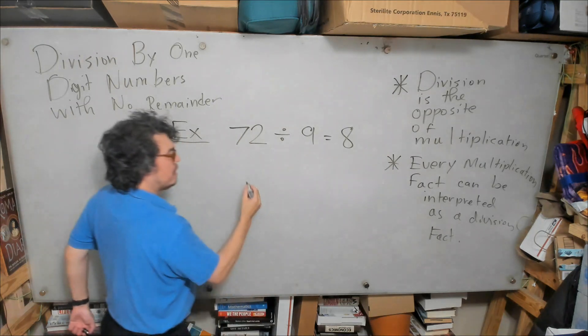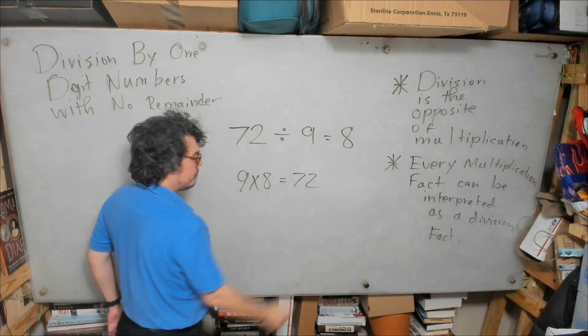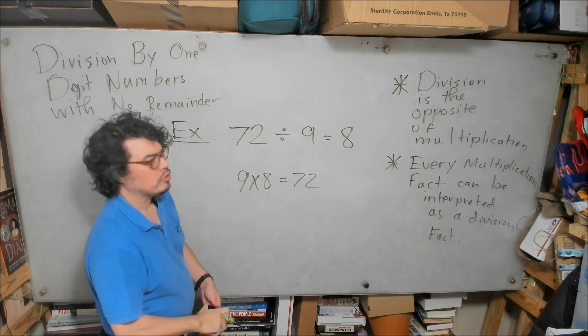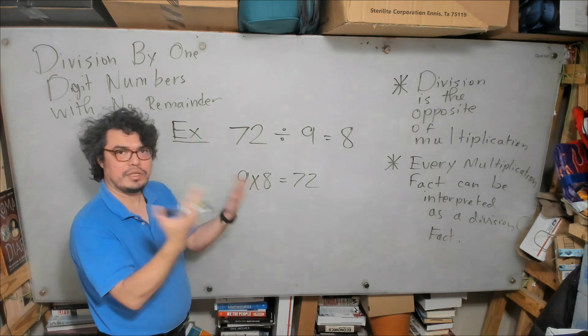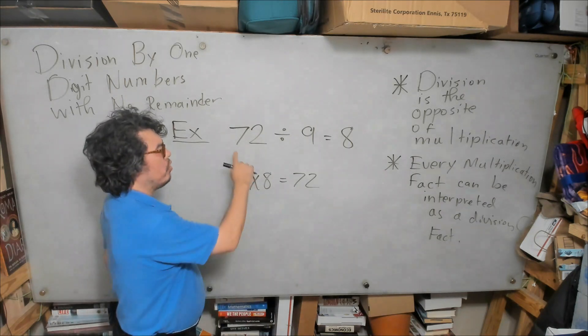We know it must be 8 because 9 times 8 is equal to 72. Now, just to familiarize yourself with the notation that we're going to be using later, we know that we would put this number on the inside of our division house.